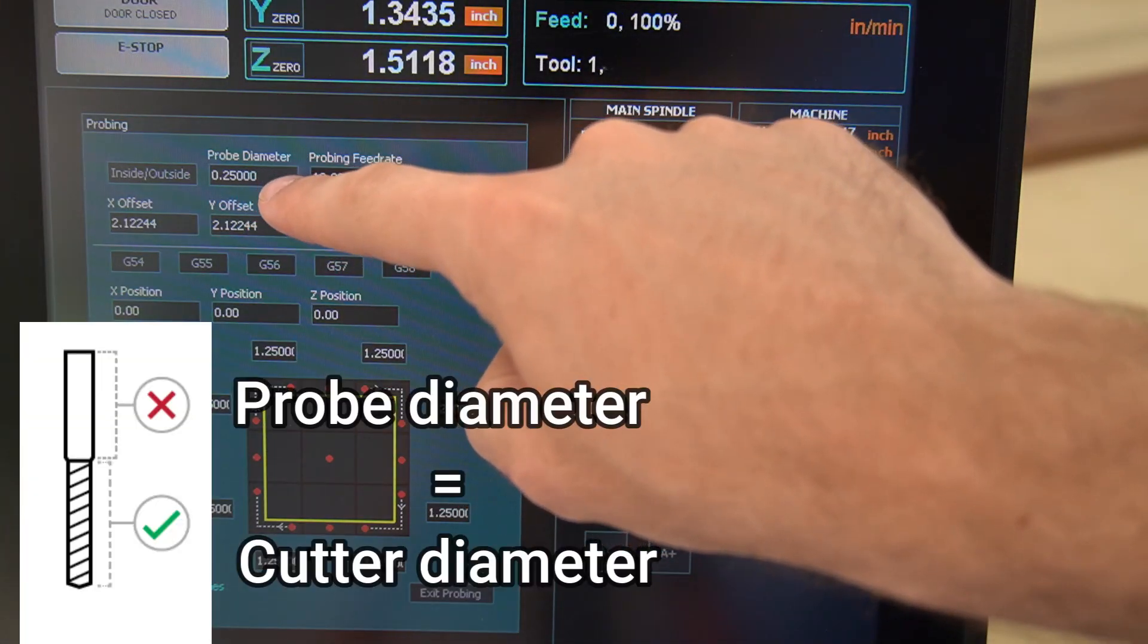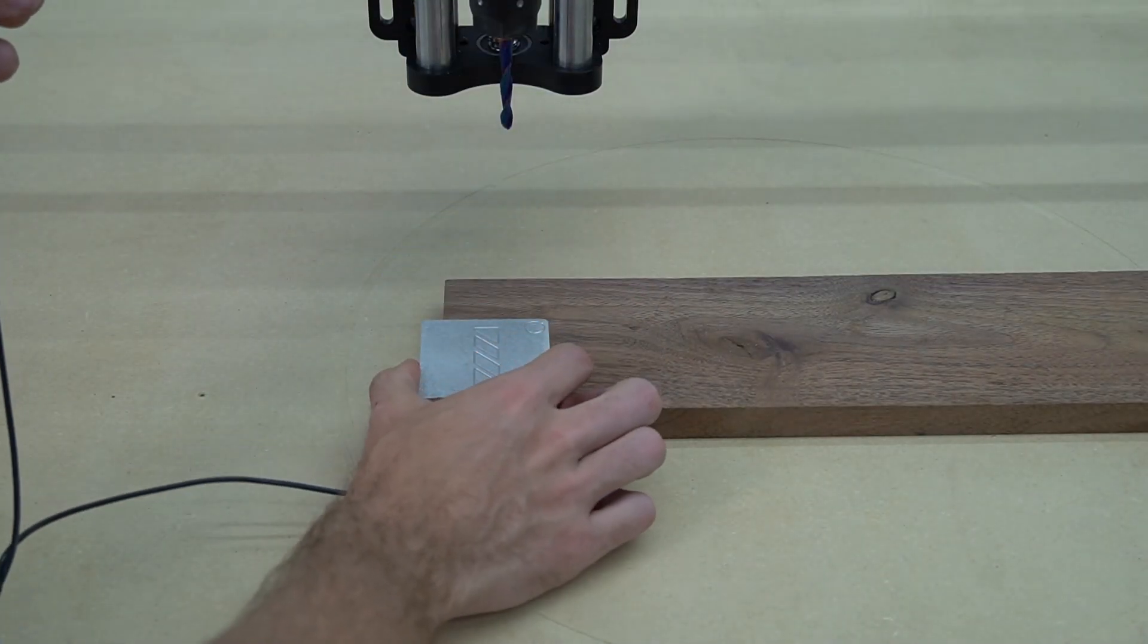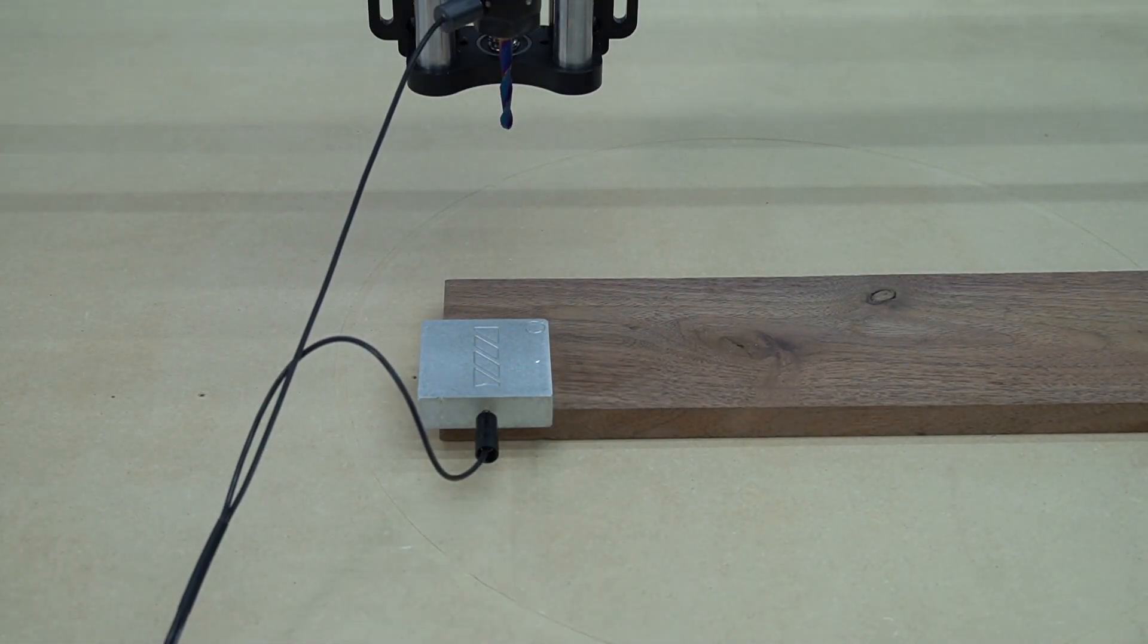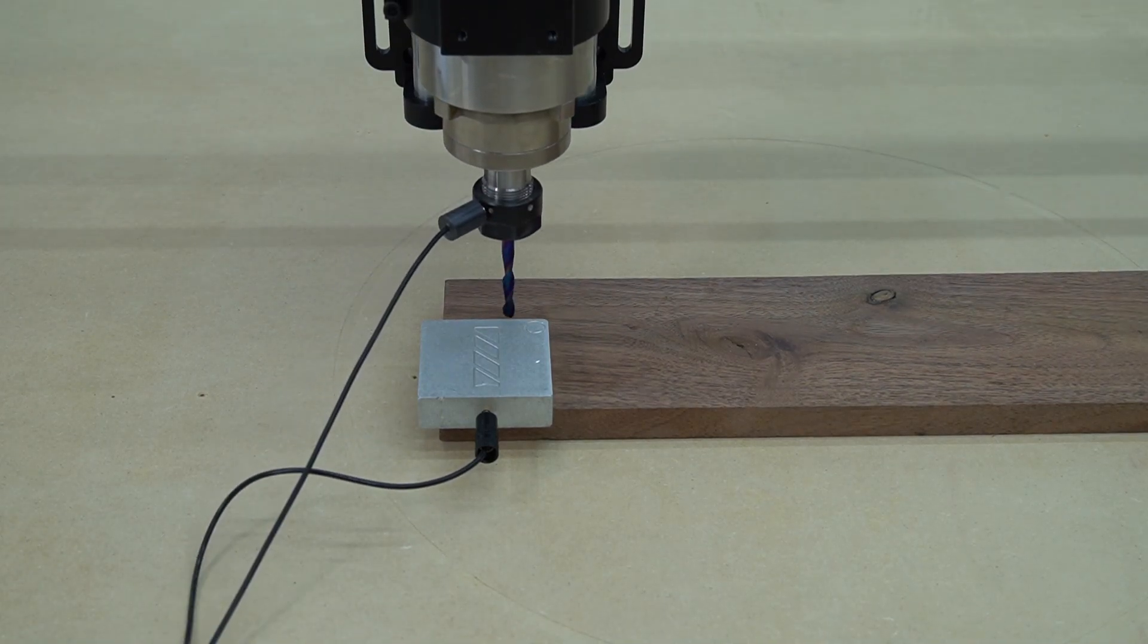At the very top of the probing page, we see probe diameter. This is the diameter of the cutter we will be using the probe with. In this case, it is 0.25 inches. Now we're ready to move the bit into place to probe it.